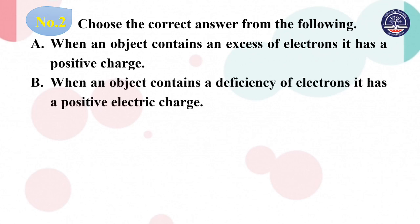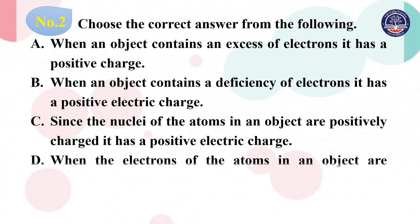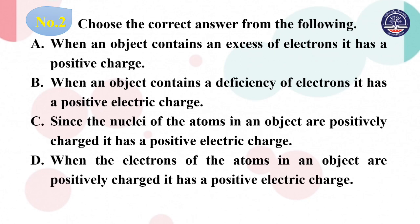Multiple choice: When an object contains a deficiency of electrons, it has a positive electric charge. Since the nucleus of an atom is positively charged, when an electron of the atom is removed, it results in a positive electric charge.